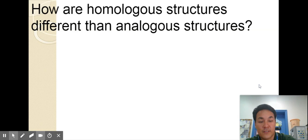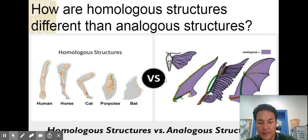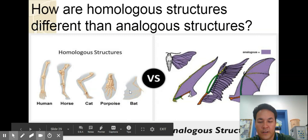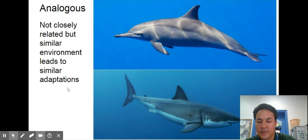See here you have the analogous structures right the insect is not closely related to the birds but they're in a similar environment so they might have similar adaptations. Here these are showing common ancestry. Analogous not closely related but similar environment leads to similar adaptations.